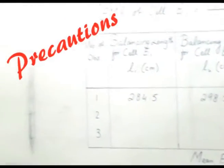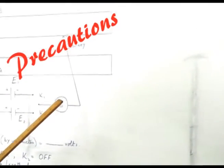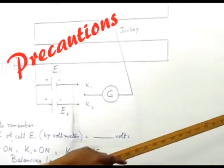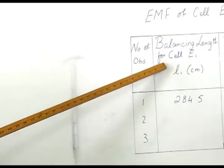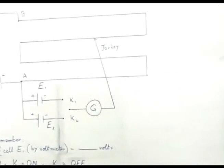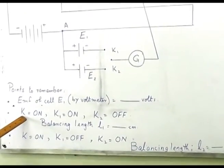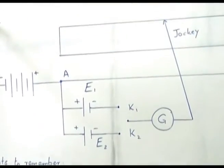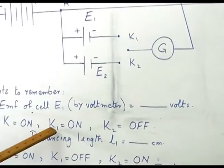Now, in the end, let me tell you one thing. There are few points which you have to remember. While when you have to take L1, that is the balancing length for the cell E1, the points which we have to remember is that your key K, which is this plug key, it should be on.